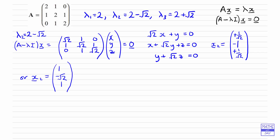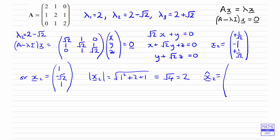It doesn't actually matter which form you use because you'll end up with the right answer after normalising. The magnitude of x₂ is the square root of 1 squared plus root 2 squared plus 1 squared, which is root 4, which equals 2. So we divide each element by 2, giving the unit eigenvector as one half, minus root 2 over 2 (or minus 1 over root 2), and one half. Or you could have all the opposite signs.